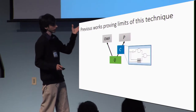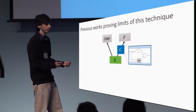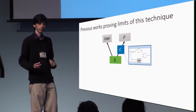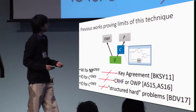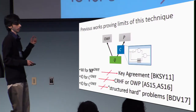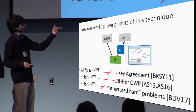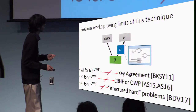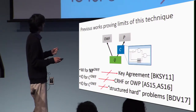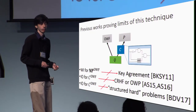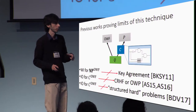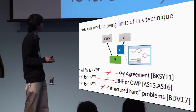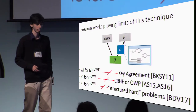There are previous works that try to prove limits of this technique — where a construction Q is based on a primitive P that accepts circuits with one-way function gates. Berkursky, Katz, Segev, and Yurikimovich showed that key agreement protocols cannot be based in a blackbox way on witness-indistinguishable proofs for statements with one-way function gates. Also, Ashraf and Segev showed that you cannot get collision-resistant hash functions or one-way permutations from I.O. for circuits with one-way function gates.